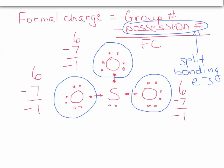What about the sulfur? Sulfur gets all of its lone pair and only half of its bond. When you look at sulfur on the periodic table, it's in group six. How many electrons do you see in the circle? One, two, three, four, five. So its formal charge is plus one.